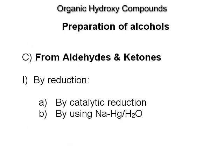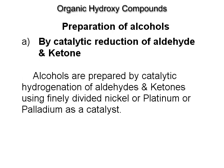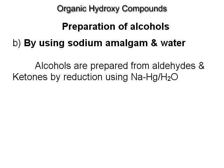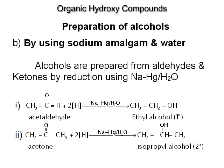From aldehydes and ketones by reduction. By catalytic reduction, alcohols are prepared by catalytic hydrogenation of aldehydes and ketones using finely divided nickel, platinum, or palladium as a catalyst. Alcohols are also prepared from aldehydes and ketones by reduction using sodium amalgam and water.